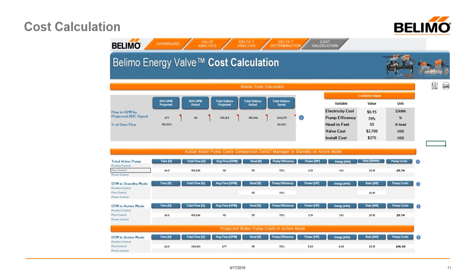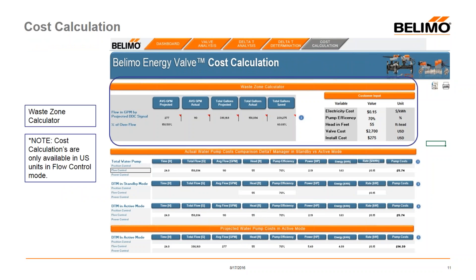The next and last calculation tab is the Cost Calculation tab. We start with the dashboard for quick navigation. The waste zone calculator looks at the projected flow rate through the valve when the delta T manager was active — it calculates what the flow would have been through the valve at the DDC set point. In this example, the projected flow rate if the DDC was in charge would have been 277 GPM, but because the delta T manager was invoked we only actually flowed 110 GPM — resulting in a 60% savings in pumping.